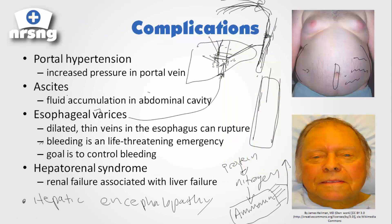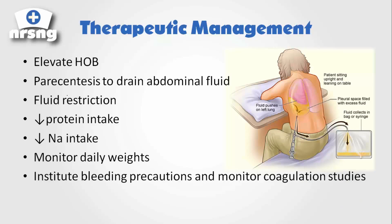What we do to get rid of this ammonia is we give what is called lactulose. Lactulose draws ammonia back into the large intestine and then helps it leave in the feces. For therapeutic management, we're going to keep the head of bed elevated, do a paracentesis for ascites — where we actually go into the abdomen and draw that fluid out — do a fluid restriction, decrease protein intake, decrease sodium intake, and monitor our daily weights. We're also going to institute bleeding precautions and monitor our coags.